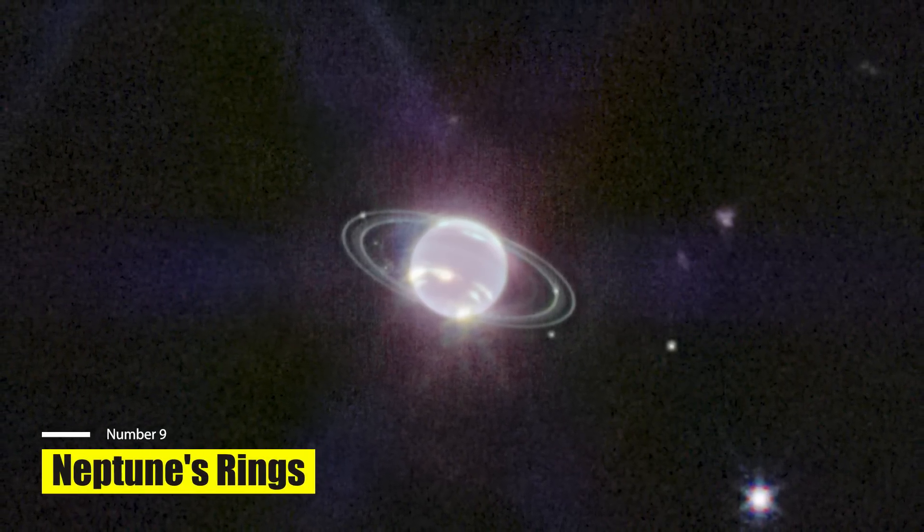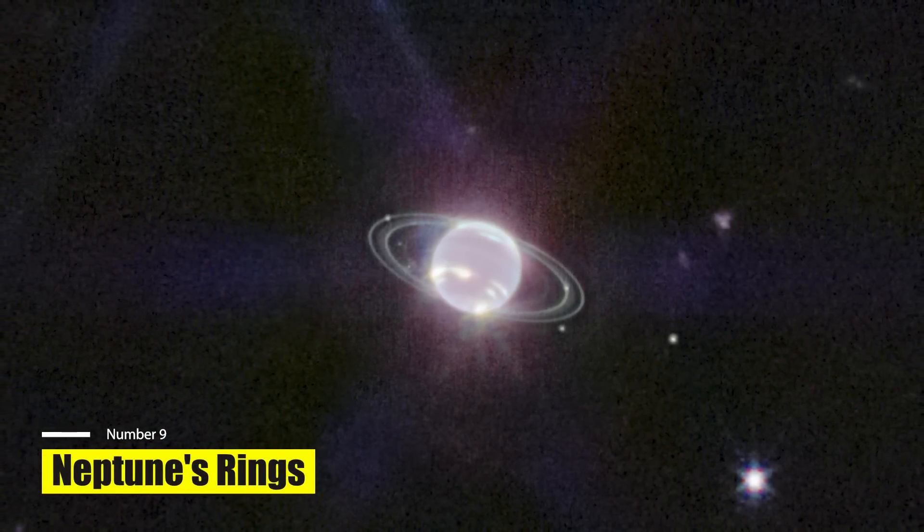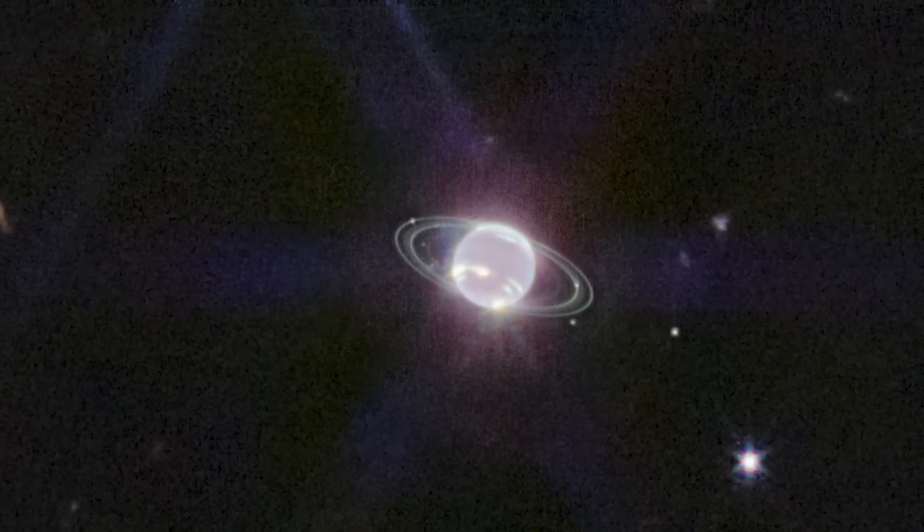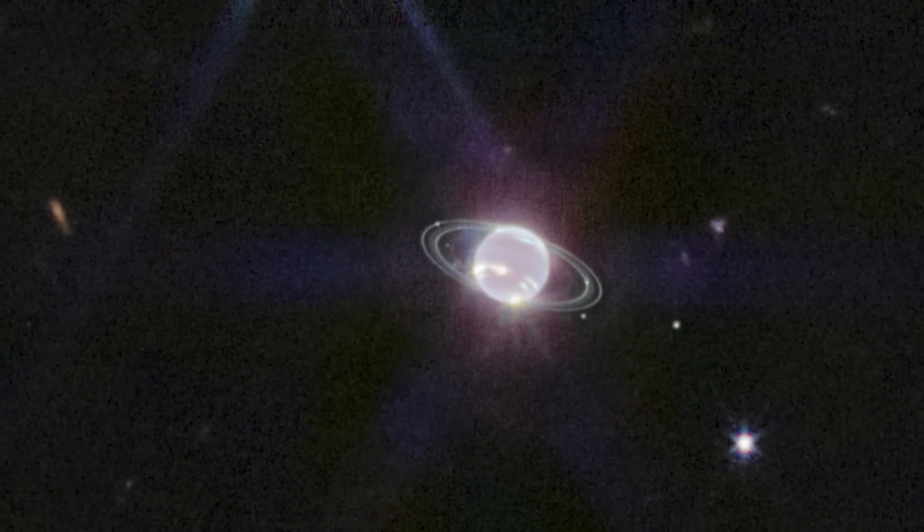Neptune's Rings. This remarkable image of Neptune's rings, captured by Webb's near-infrared camera, near-cam, reveals the planet's tumultuous stormy atmosphere. The rings haven't been observed in over 30 years.